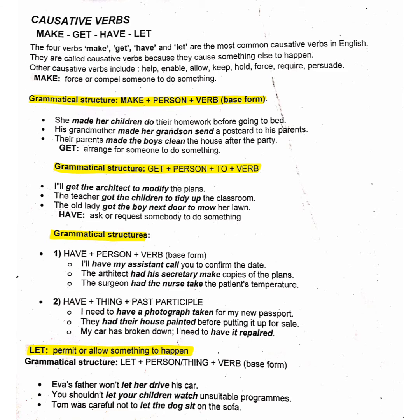Next one is have. Have is used to ask or request somebody to do something. Grammatical structure: have plus person plus base form. Examples: I will have my assistant call you to confirm the date. The architect had his secretary make copies of the plan. The surgeon had the nurse take the patient's temperature.